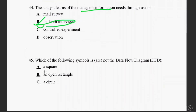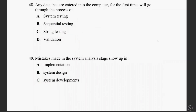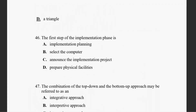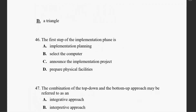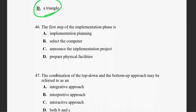Question forty-five: which of the following symbols is not in a data flow diagram? In a DFD, a square and open rectangle are used, as well as a circle. The symbol not used needs to be identified.